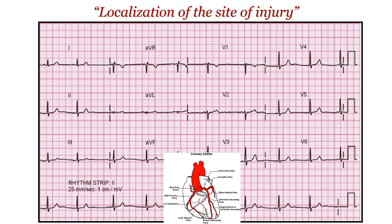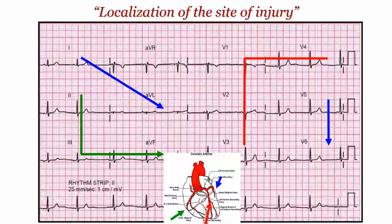Now let's move on to STEMI localization — identifying where the lesion is. For the inferior wall, check for ST elevation in leads 2, 3, and AVF. For the lateral wall, check leads 1, AVL, V5, and V6. For the anterior wall, check V1 to V4.